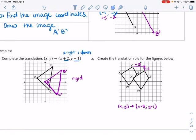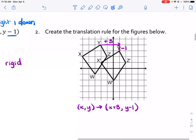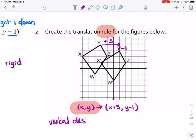Sometimes it might tell you to give a verbal description of what it is rather than writing the rule. So the rule is the x, y arrow stuff. If it says a verbal description, then you should just write which directions it goes. So this one moved 3 to the right and 1 down. All right. That is all, good luck performing and writing rules for translations.